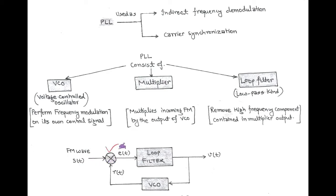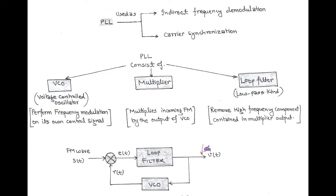The output of the multiplier, called the error signal, contains both low frequency and high frequency components. The low pass filter removes the high frequency component and allows only the low frequency component to pass. This low frequency component corresponds to the modulating or message signal.